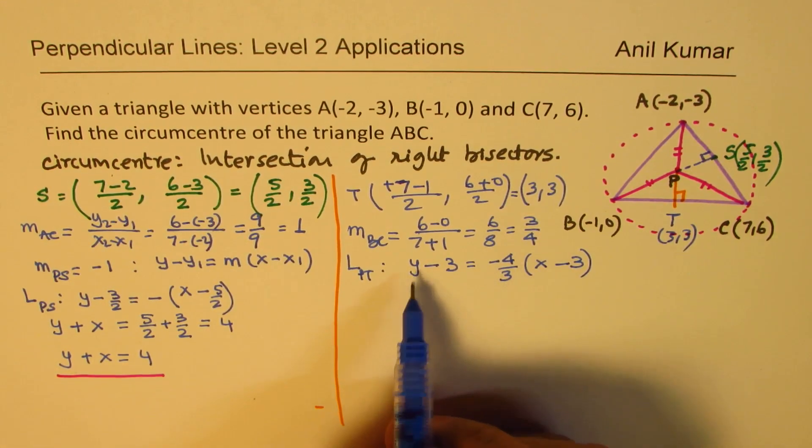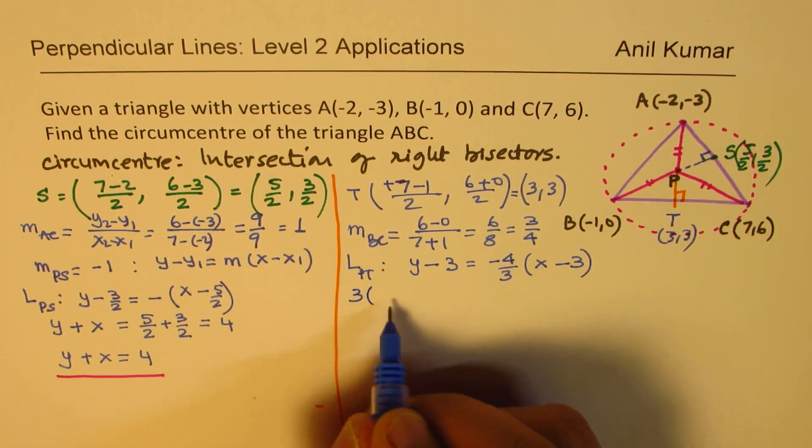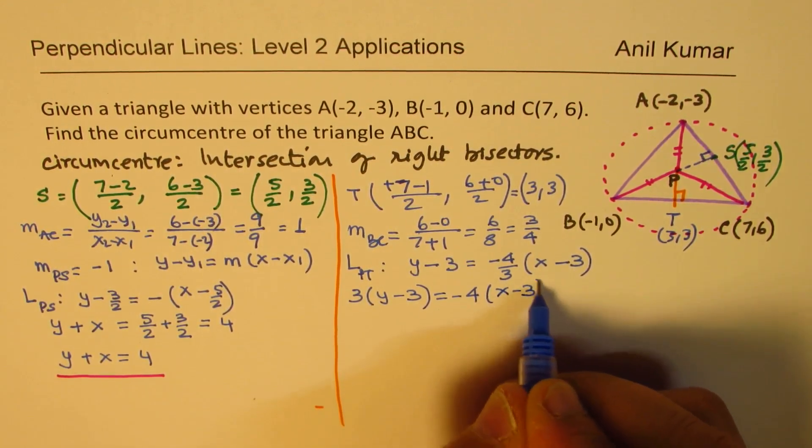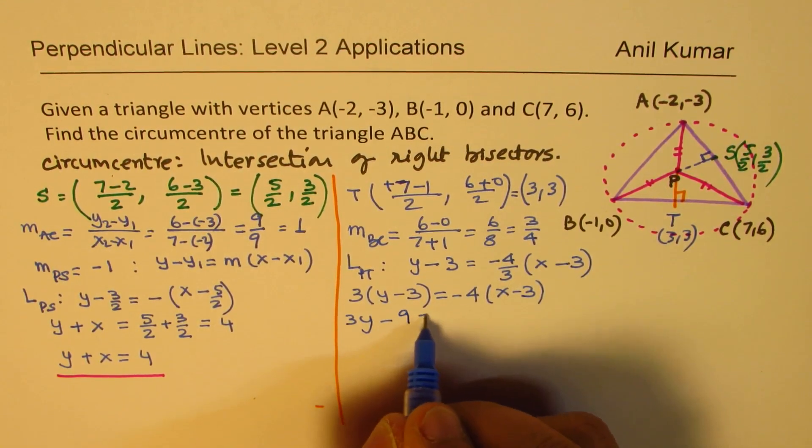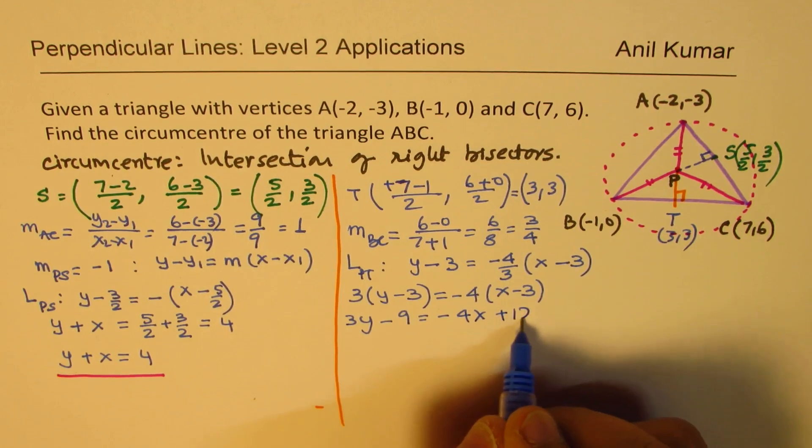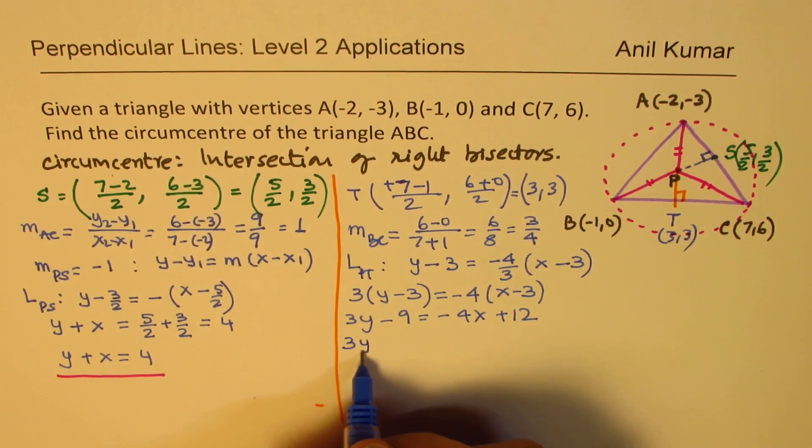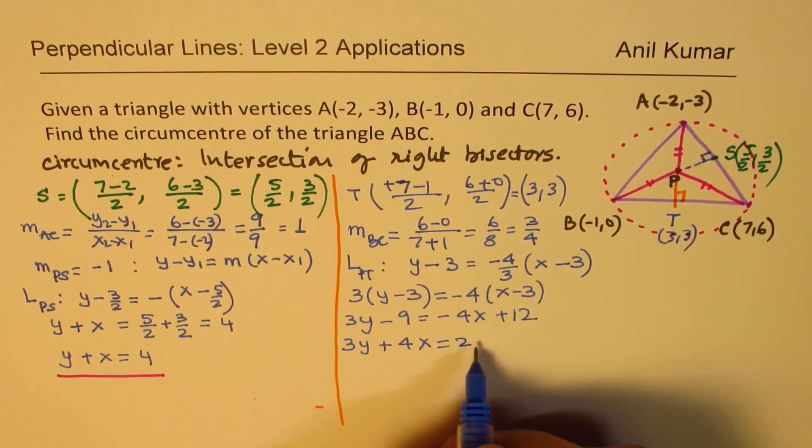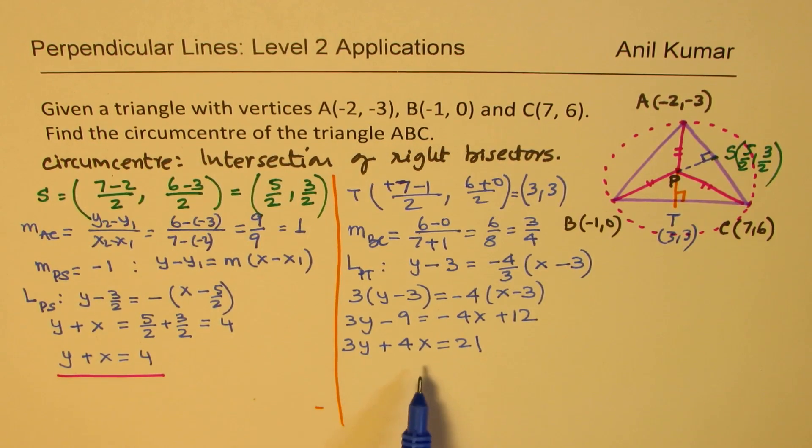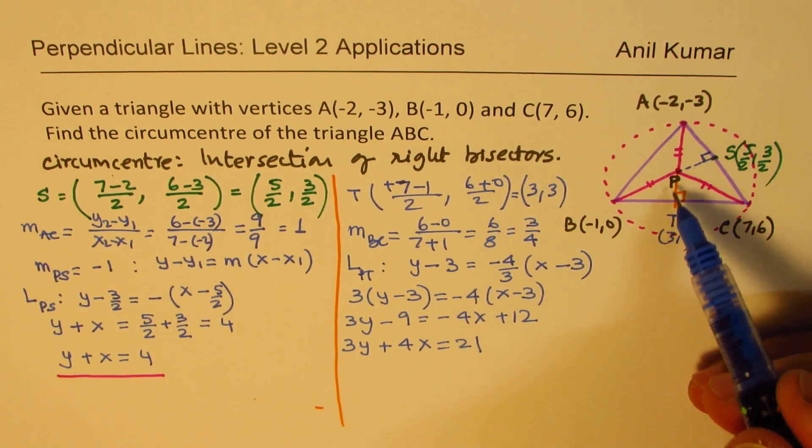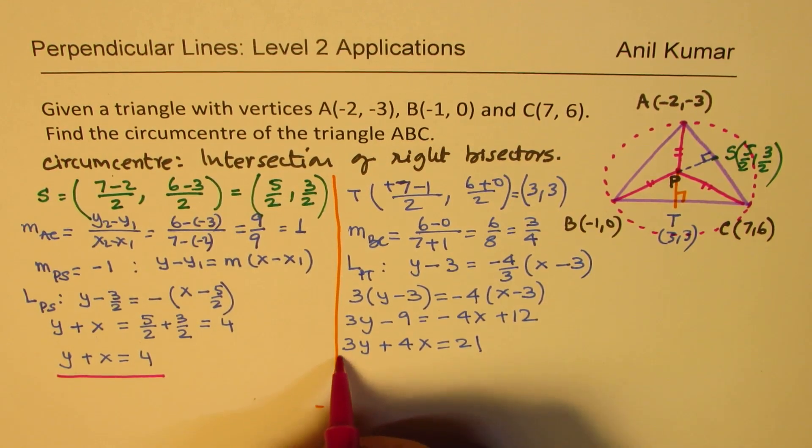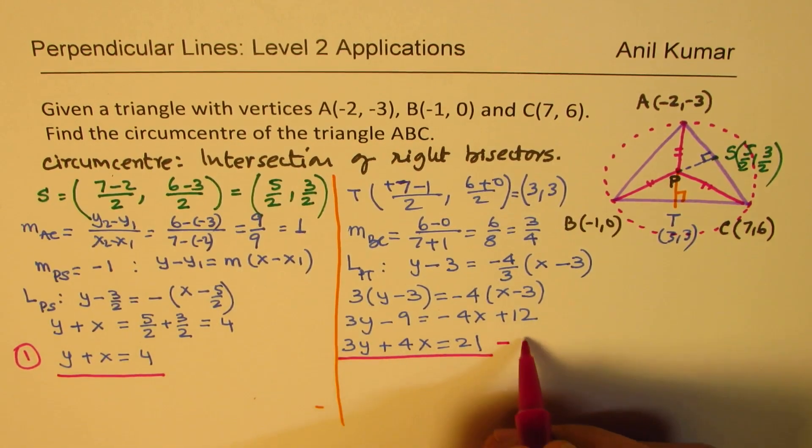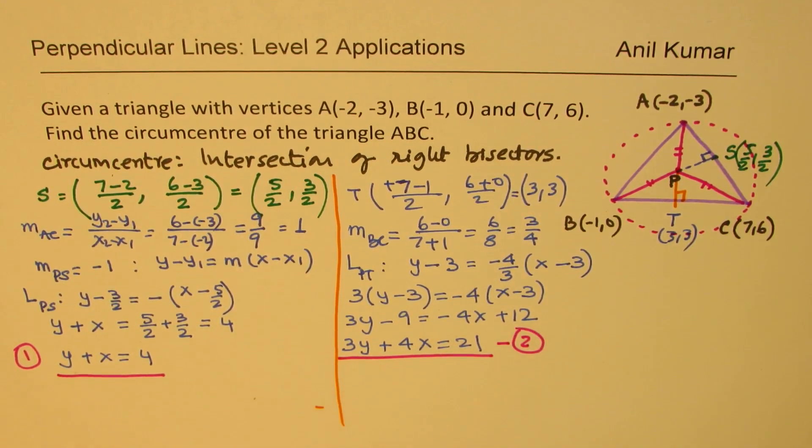Now, to solve this equation, let me multiply this side by 3. So we get 3(y - 3) = -4(x - 3). Let's open this: 3y - 9 = -4x + 12. Bring them together, so we get 3y + 4x = 21. So that is the equation, which we get as a right bisector PT. This is our equation 2.